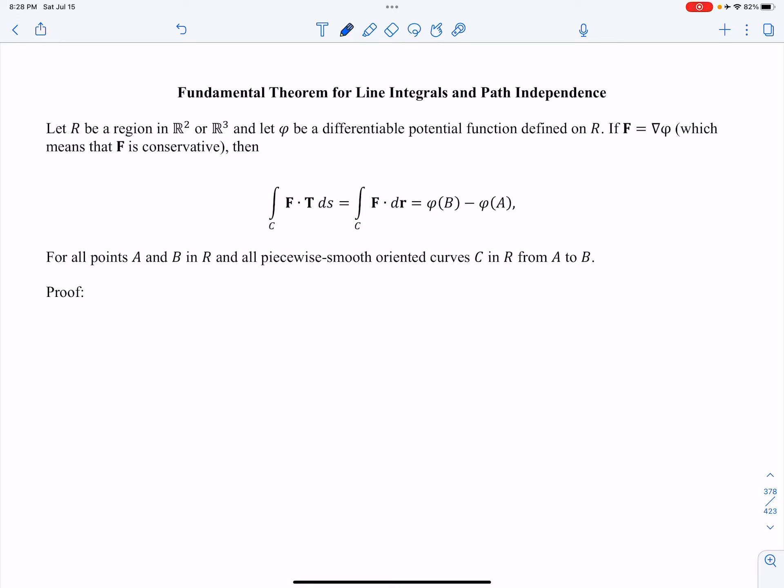This video will continue our discussion of conservative vector fields and running a line integral with a conservative vector field. Alright, so we have a definition here. This is a beautiful thing if they are conservative. So let R be a region in R2 or R3. Let phi be a differentiable potential function defined on R. And then we're saying here that F is conservative by saying that if I take the gradient of phi, I get F. Then I have this definition.